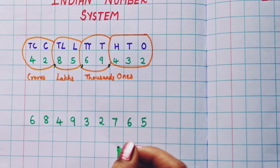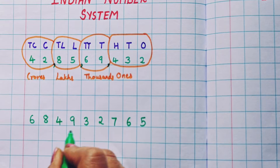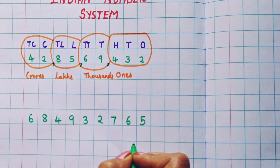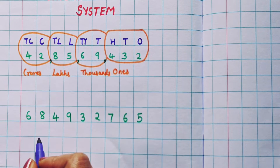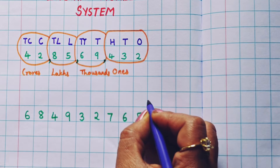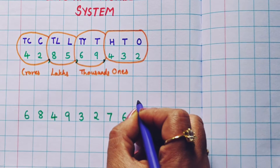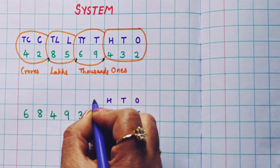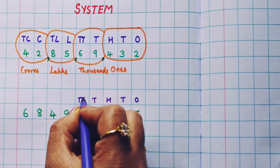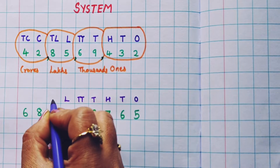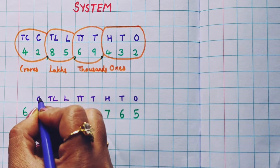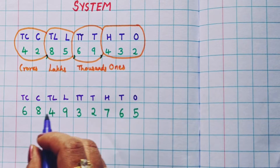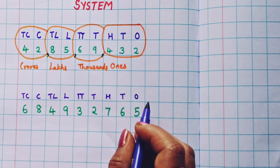Now let's understand this number system with one more example. Here I have taken a number. First we are going to give the commas. If you want, you can also write the places of this number so that there is no confusion. Let's write them: ones place, tens place, hundreds place, thousands place, ten thousands place, lakhs, ten lakhs, crore, and ten crore.